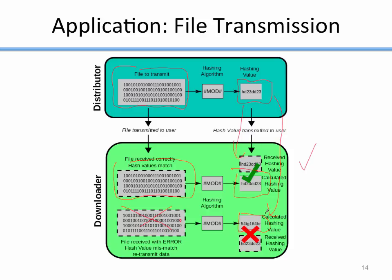BitTorrent does this for blocks of data — it splits data into chunks, computes a hash of each chunk, and after downloading a chunk the client verifies it against the downloaded hash. One potential weakness though is that this approach is only good against errors, not intentional tampering. If an attacker breaks into the distributor's computer and inserts a virus, they can also produce a new hash since there's nothing secret about the hashing algorithm. An intentional attacker would simply change the file and change the hash, and all checks would pass.